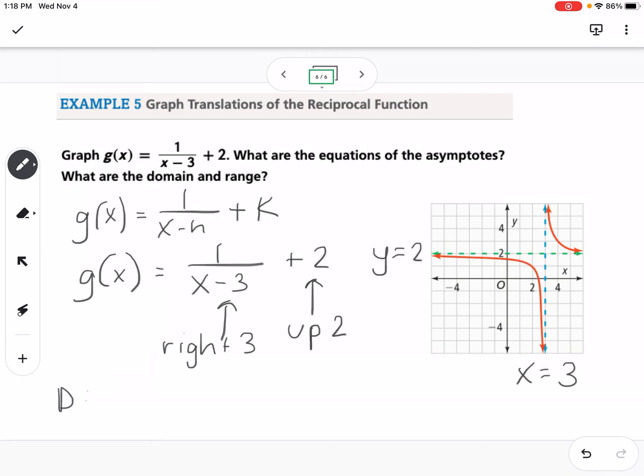The domain in this case is all numbers except for my vertical asymptote, so it would be negative infinity to 3 and 3 to infinity. My range would be all real numbers except for my horizontal asymptote, so it would be negative infinity to 2 and 2 to infinity.